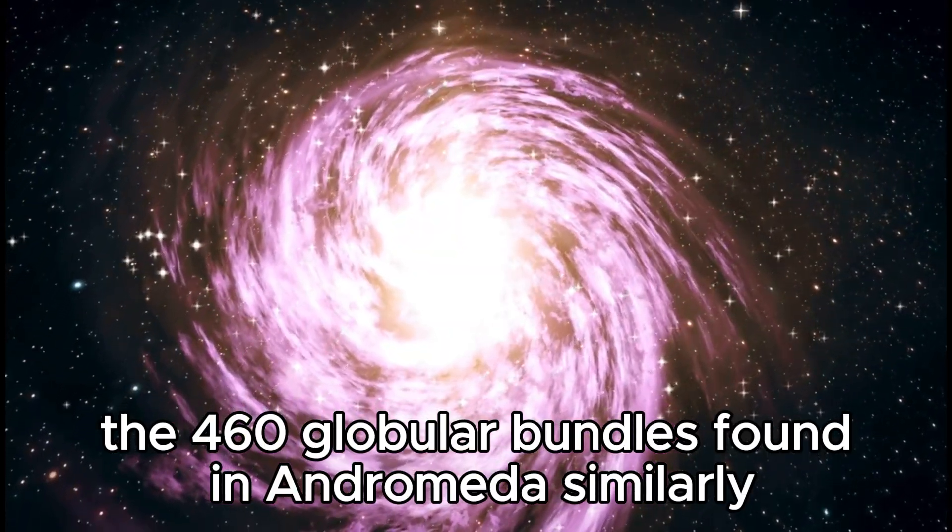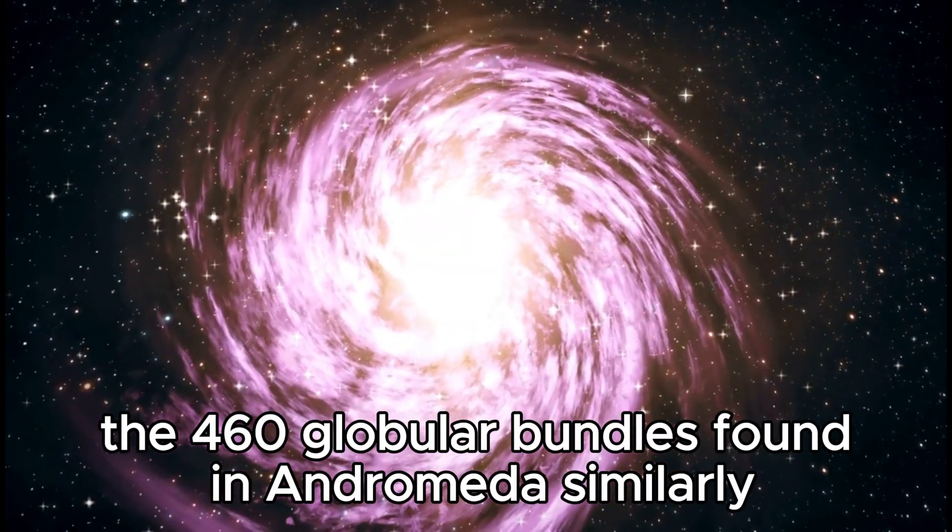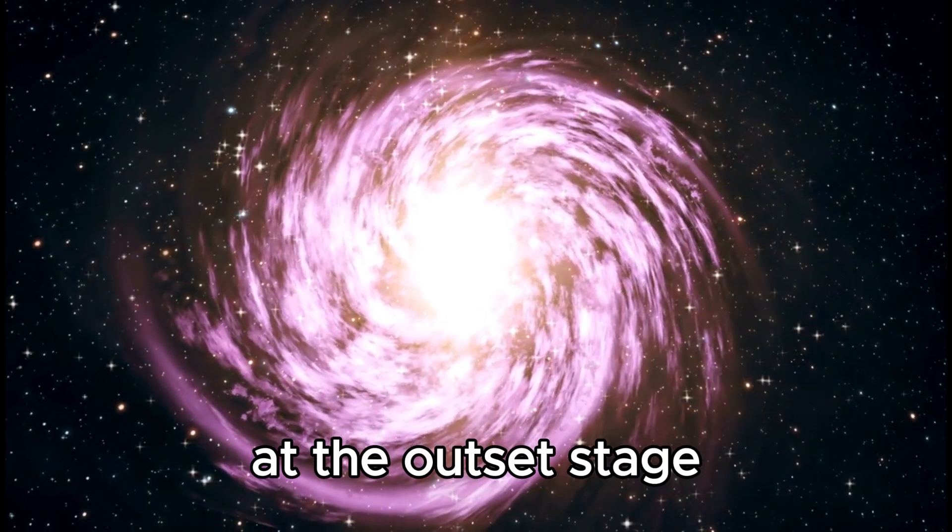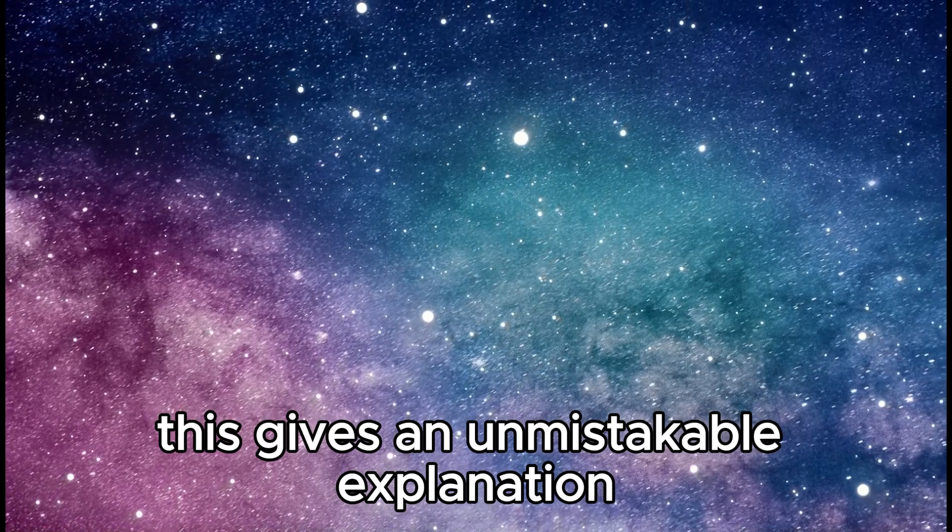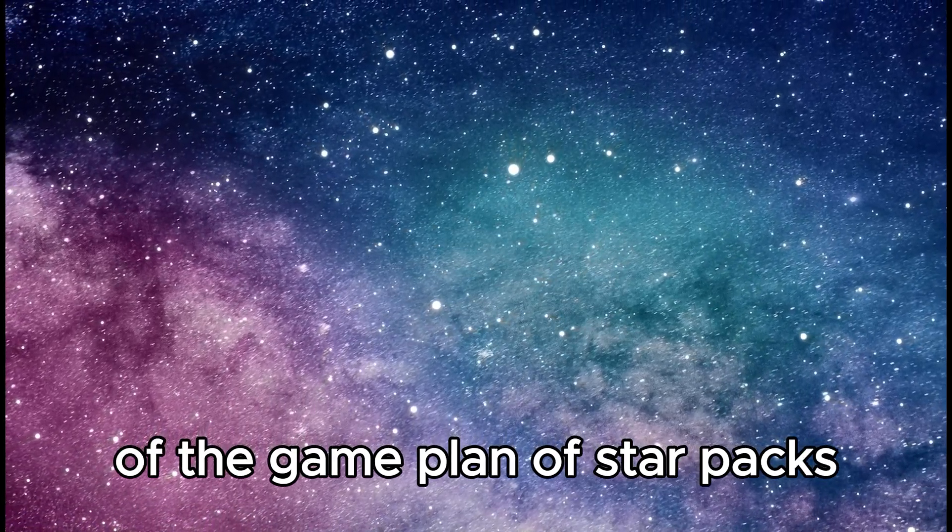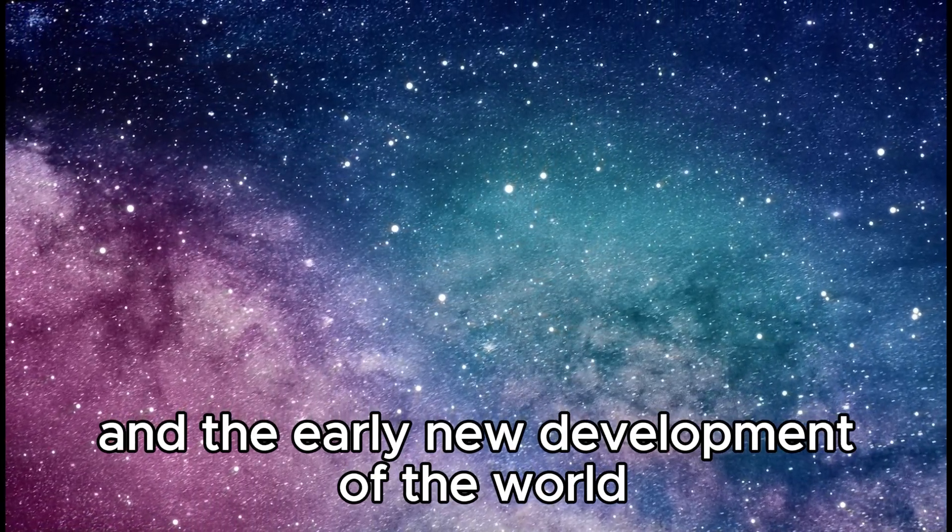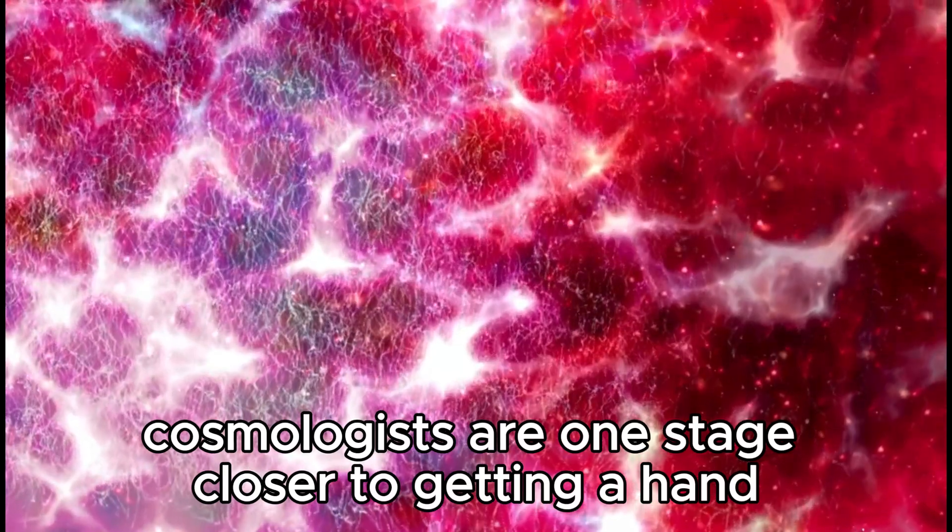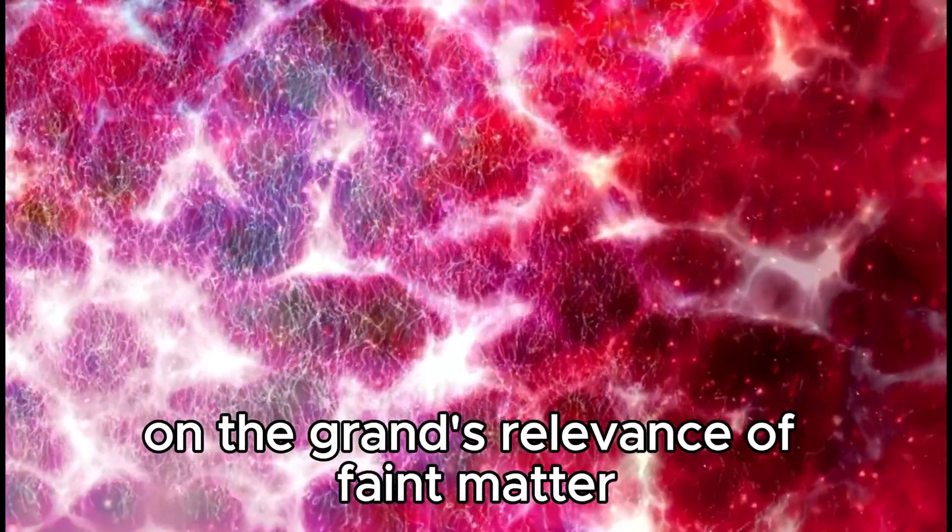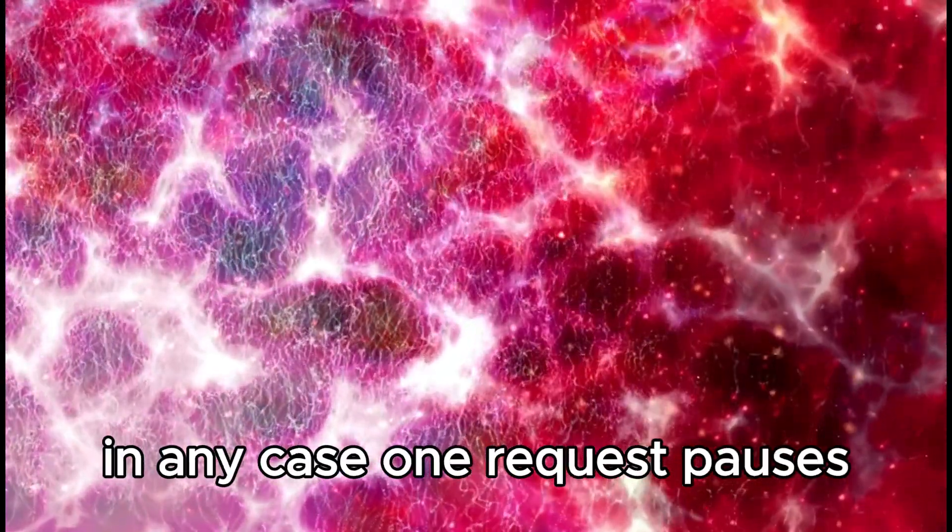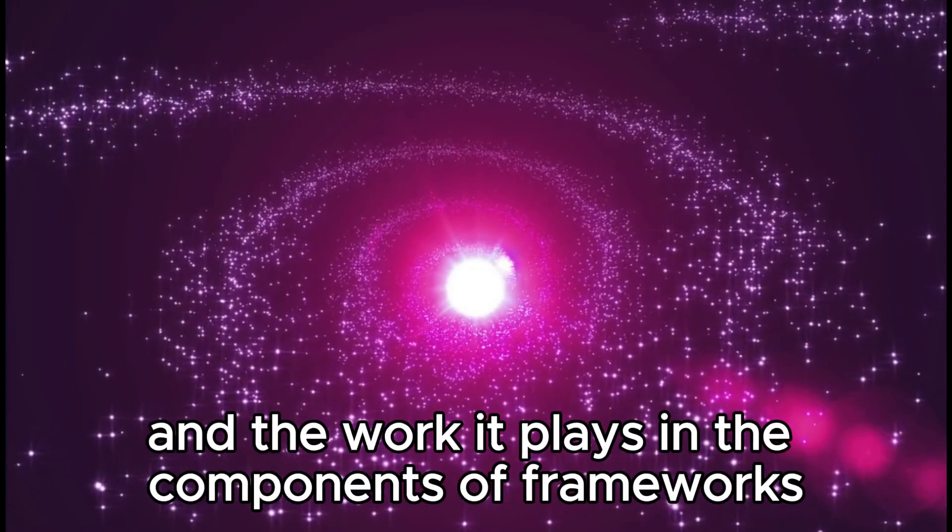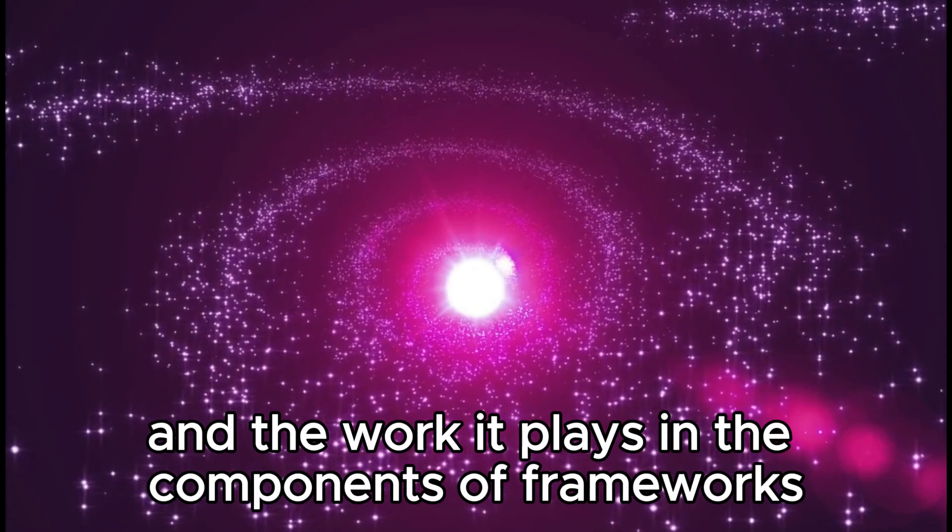The 460 globular bunches found in Andromeda similarly offer comprehension into the game plan of stars at the outset stage. This gives an unmistakable explanation of the game plan of star packs and the early new development of the world. In figuring out the mysteries of Andromeda, cosmologists are one stage closer to getting a hand on the grand relevance of dark matter. In any case, one request pauses. How would they address its confusing nature and the work it plays in the components of frameworks?